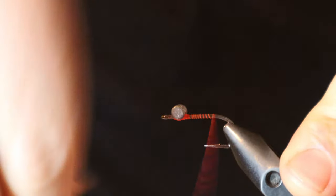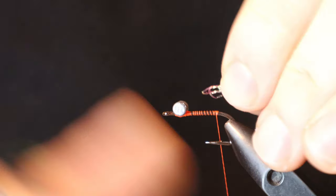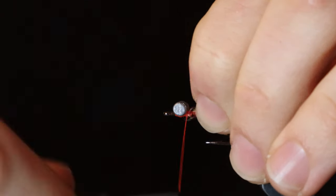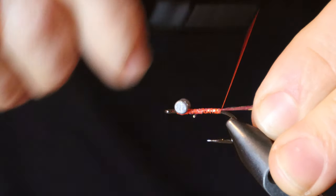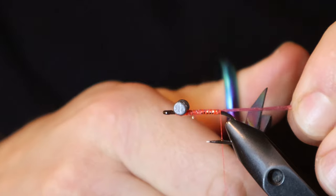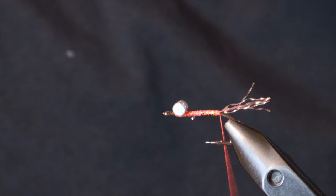Apologies that the camera goes out of focus here but it's just a bunch of thread wraps and you're going to wrap back to the back of the hook and tie in some pink crystal flash. After that's tied in, you're just going to cut it off to length and then you will tie in your small fibered chenille.